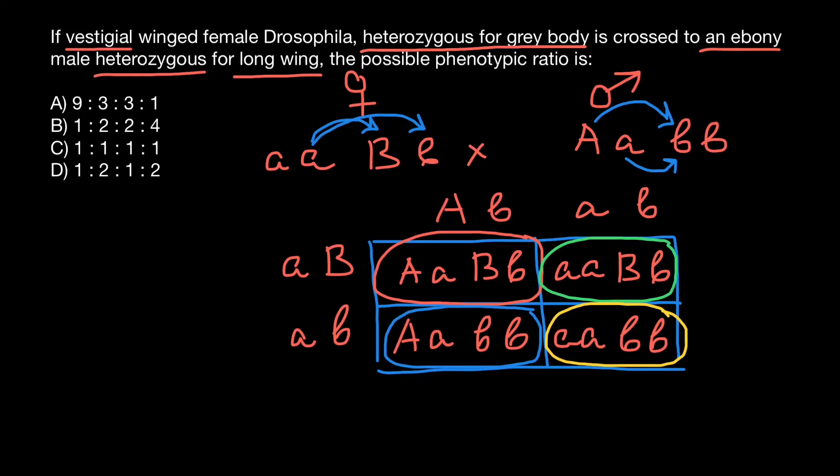So as you see, the ratio is going to be one to one to one and to one. In the progeny, we are going to see four different phenotypes, and the ratio is going to be one to one to one and to one. So each phenotype would be represented in equal amounts in the progeny. And that means that the correct answer is answer C.